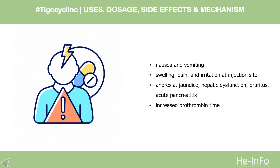Side Effects: As a tetracycline derivative, Tigecycline exhibits similar side effects to that class of antibiotics. Gastrointestinal (GI) symptoms are the most common reported side effect. Common side effects include nausea (26%) and vomiting (18%), which tend to be mild or moderate and usually occur during the first 2 days of therapy.